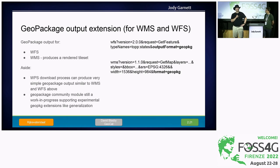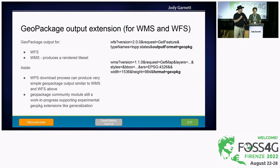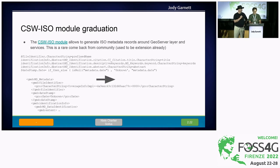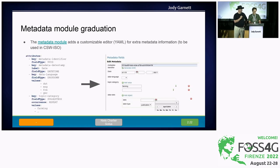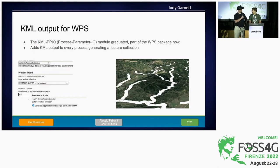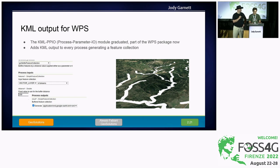We've added GeoPackage output support, so in addition to downloading Excel, CSV, or shapefile, you can now download a GeoPackage from WFS or WMS requests — functionality that existed before but has now been graduated to extension. We also have the graduation of the CSW ISO module, which was once an extension, then downgraded to community, and has now come back with a maintainer. Along with it came the metadata module, which allows you to define an input form, add extra metadata in the layer, and use that information to make ISO documents richer. We also have KML output support for WPS now, which parallels the WFS. It's part of the WPS package — you just download WPS and it comes with KML.